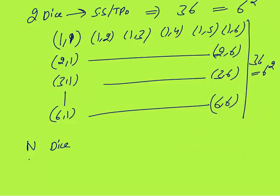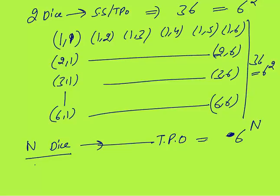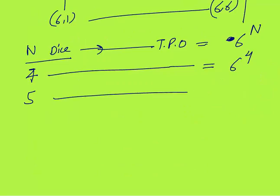So when two dice are thrown, total possible outcomes are 36. In general, when n dice are thrown (or one dice thrown n times), total possible outcomes are 6 raised to the power n. For example, four dice → 6⁴; five dice → 6⁵.